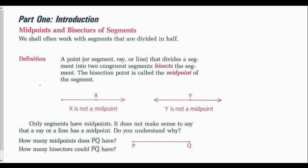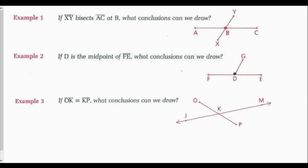Rays and lines extend infinitely, so we can't have a midpoint of infinity. Now in my figure below I have line segment PQ. How many midpoints does line segment PQ have? It would only have one midpoint because there's only one middle point of that line segment. However, it could have an infinite amount of bisectors that create that one midpoint. If line segment XY bisects line segment AC at B, what conclusions can we draw?